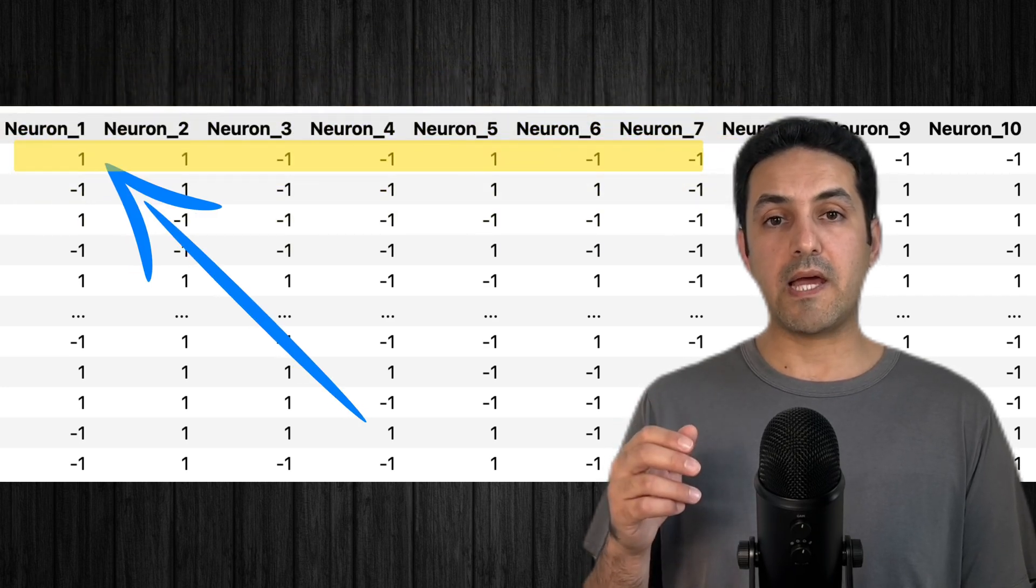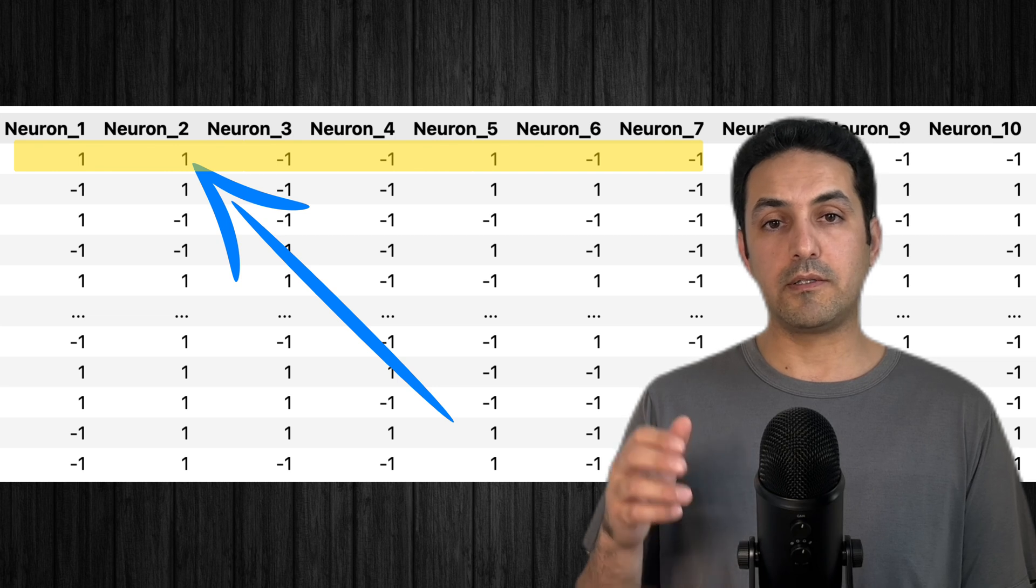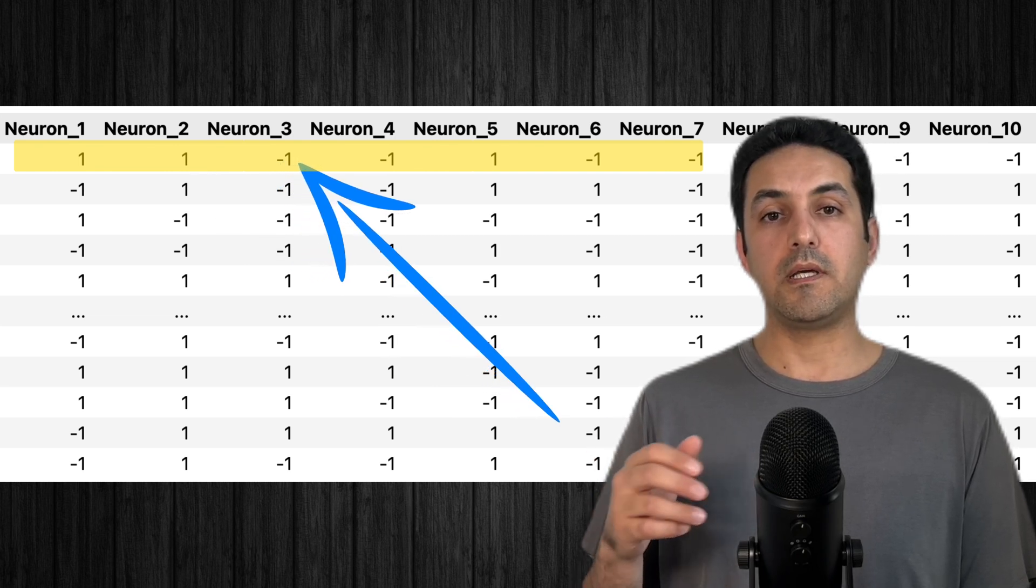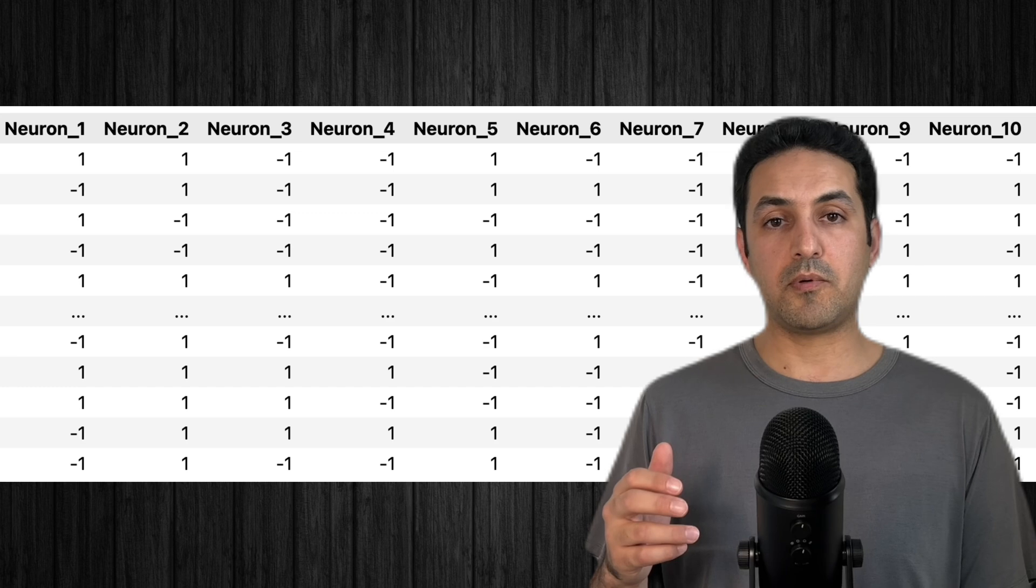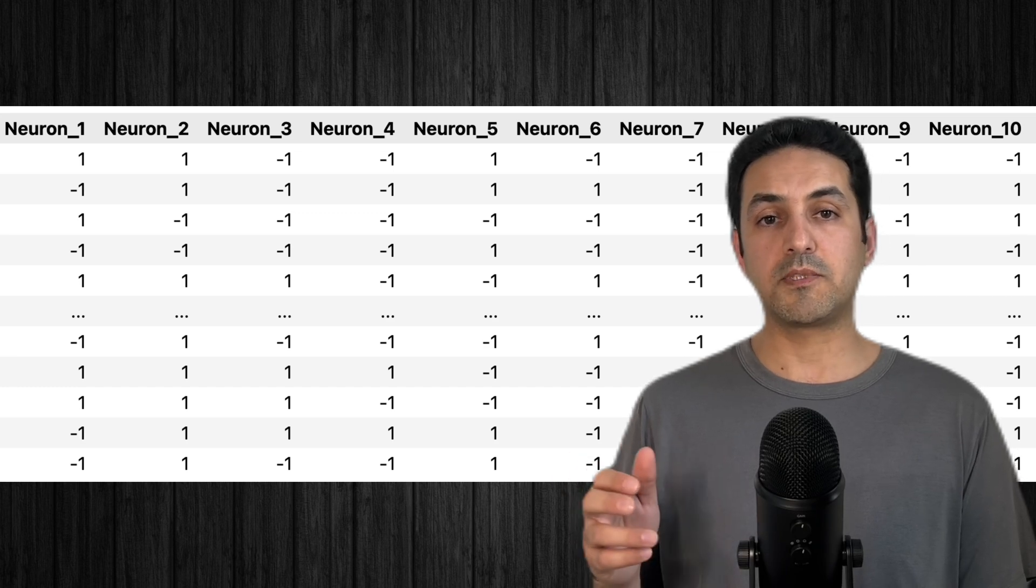For example, in this row of the spreadsheet, the first neuron is active, the second neuron is also active, and the third neuron is inactive, and you can interpret the rest of the rows and columns in the same way.